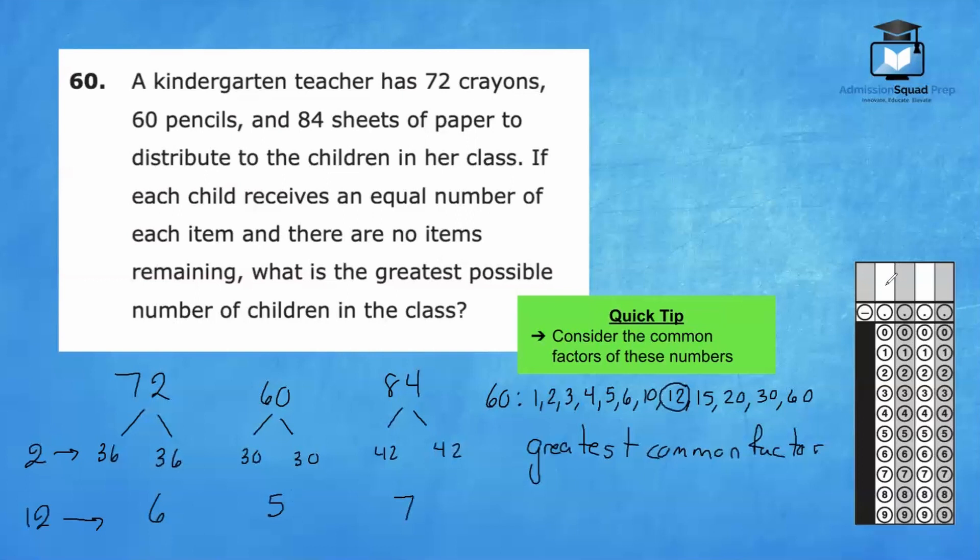Let's write in our final answer. We will have 12 written here at the top, starting with the white box, and we'll bubble in the number one and bubble in the number two.